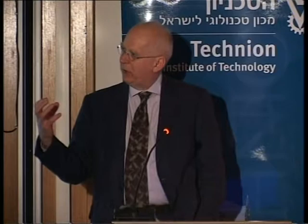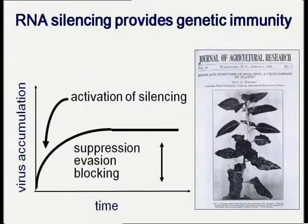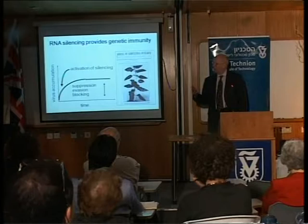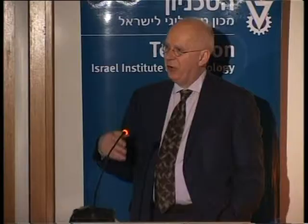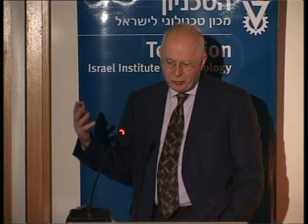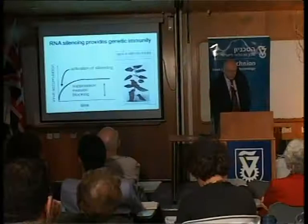A colleague pointed me to an experiment published in 1928 describing a very strange phenomenon: when tobacco plants got infected with a particular virus, initially the plants got very sick with strong symptoms, but then they seemed to recover. The upper leaves looked essentially healthy. But these recovered leaves could not be re-inoculated with the virus that established the infection—they could be infected with any other virus, but not the original one. You've got sequence-specific immunity here, which sat in the literature for 70-odd years without explanation. We now know that it's RNA silencing.